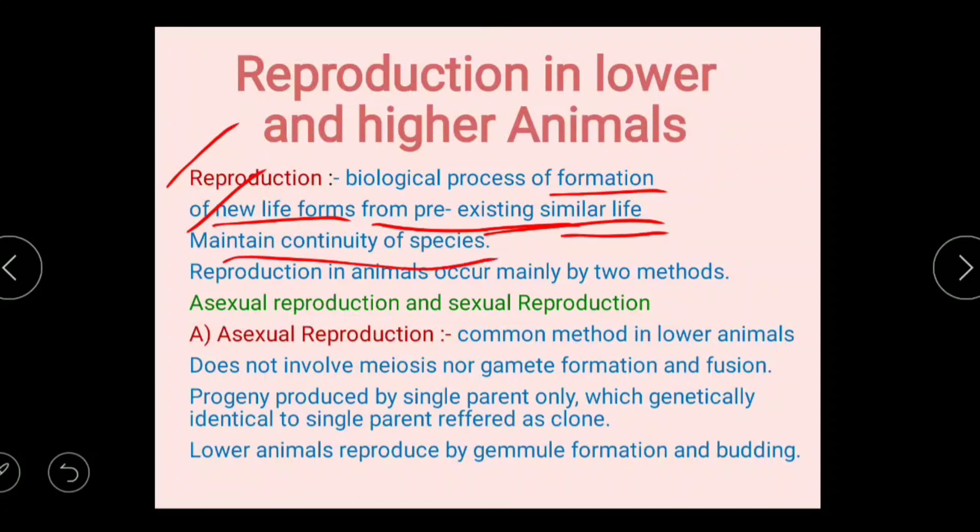If a species has the ability to reproduce, it will produce new offspring or young ones. If species can reproduce, the two individuals form new offspring and it maintains the continuity of species.